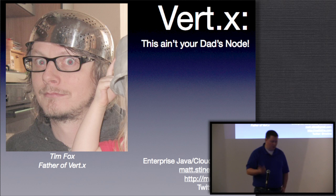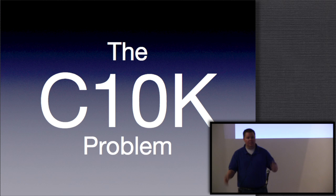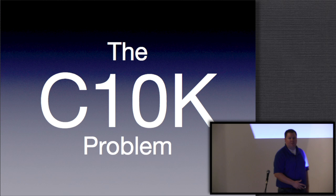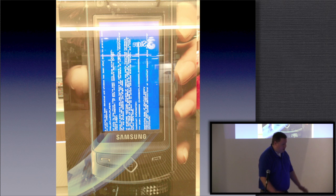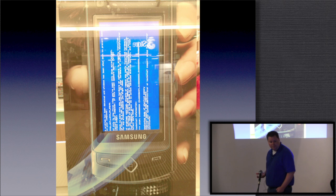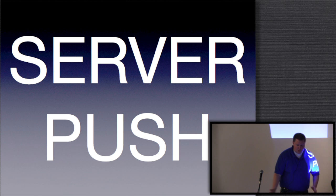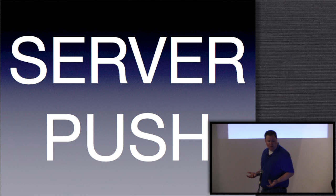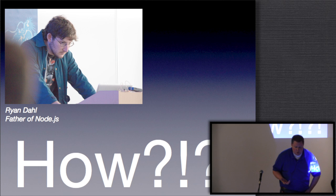I want to look at two problems. Everyone familiar with the C10K problem? How do we deal with 10,000 concurrent connections without the server falling down? This has become especially pertinent in the last five years or so with the birth of smart mobile devices. We've actually passed the point where there are now more mobile devices connected to the internet than PCs. We also need to build advanced server push features — how do we get data into the browser without constantly polling to build rich internet applications?